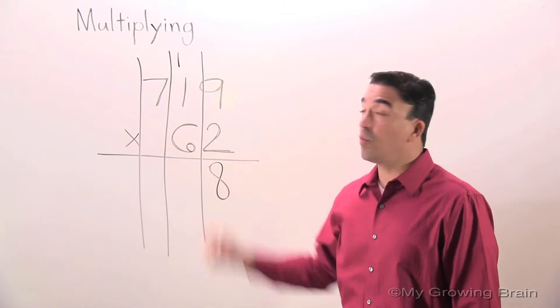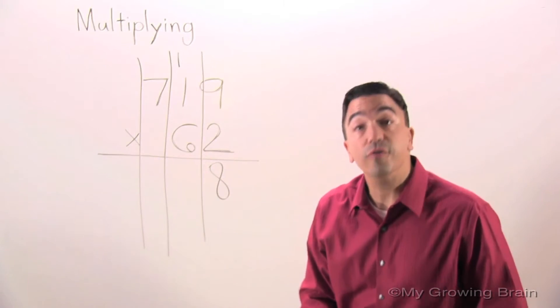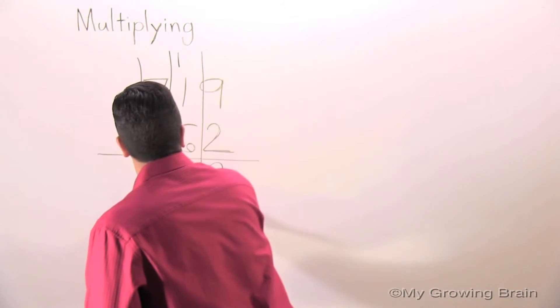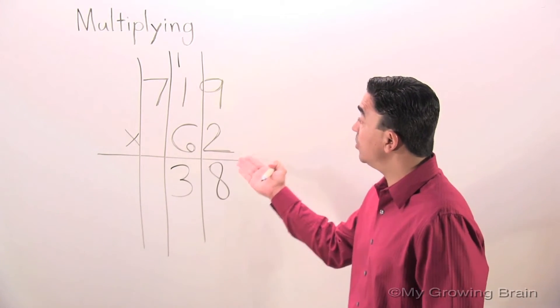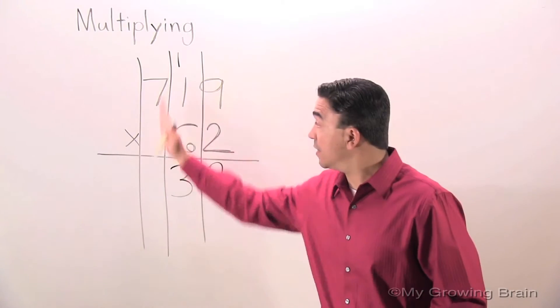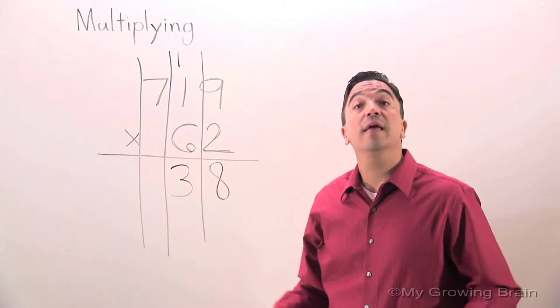Two times one is two. Plus one is three. Now, I'm going to multiply two times seven in the hundreds place. Two times seven is fourteen.